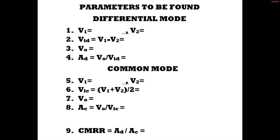Both the modes have two inputs, V1 and V2, but the total inputs are different in both of them. In Differential Mode, the total input voltage is the difference of the two, whereas in Common Mode, the total input voltage is the average of the two.